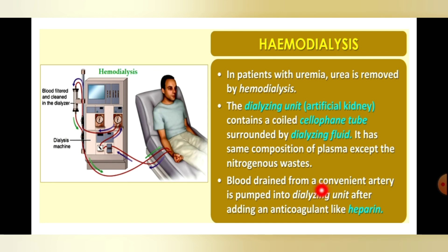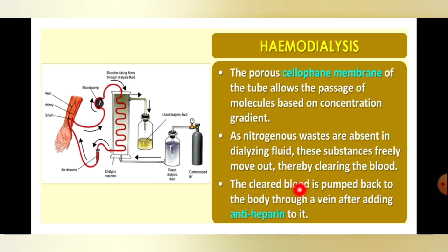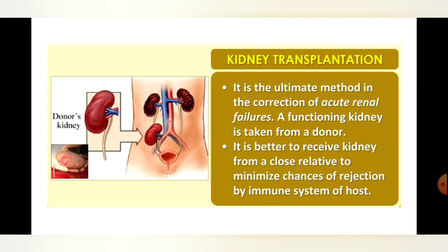The anticoagulant prevents coagulation during dialysis, and anti-heparin restores coagulation before the purified blood is returned through the vein. The ultimate method for kidney failure is kidney transplantation — a donor kidney is transplanted to the receiver. There are chances of organ rejection, so the kidney should ideally come from a close relative, and lifelong immunosuppressants must be given. This concludes today's part on dialysis and kidney transplantation.